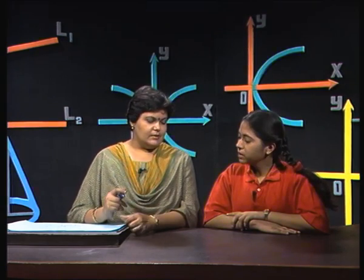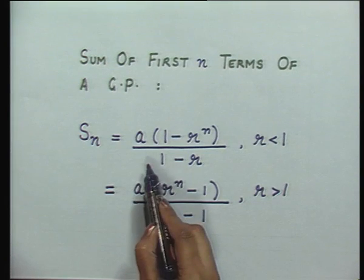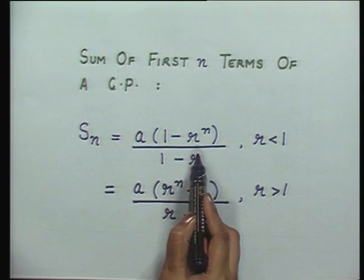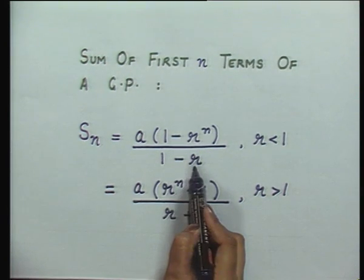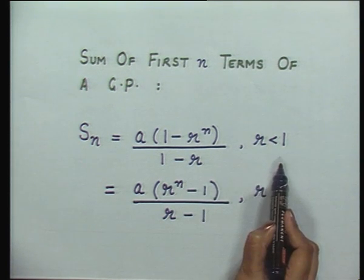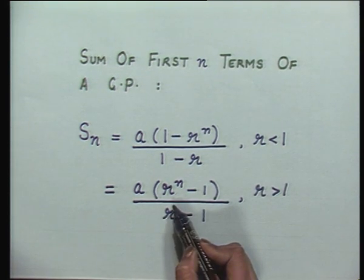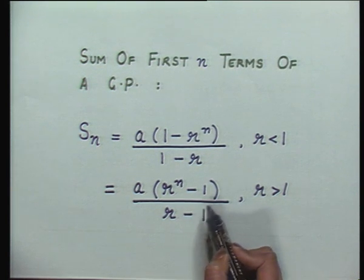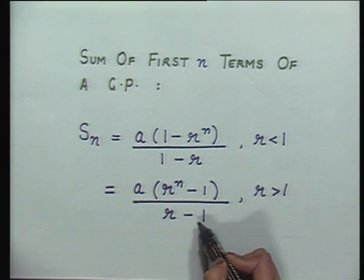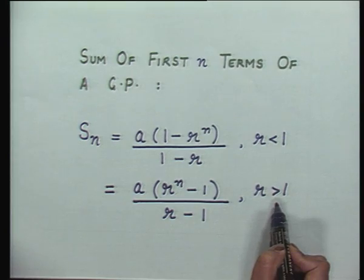Hello, Shipra. Hello, ma'am. If you remember in our previous lesson, we discussed the sum of first n terms of a GP. Do you remember the result? The sum is given by Sn = a(1 - r^n)/(1 - r), where r < 1. Or we can write it as a(r^n - 1)/(r - 1), where r > 1. That is right. And we discussed some applications of this formula.